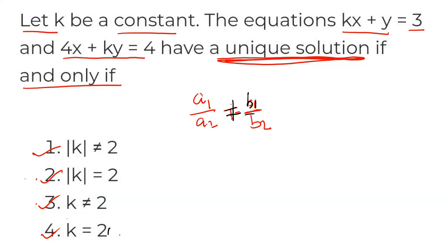So, unique solution means a1 by a2 not equal to b1 by b2. Now, let's see the option. So, this option is eliminated. If it is not equal, that option is eliminated. So, we have two options. So, now, a1 means that equation 1 coefficient of x. So, k, divided by a2, second equation coefficient of x, 4, not equal to b1, y coefficient 1, by b2, second equation y coefficient 1. Cross multiply: k square not equal to 4. K square not equal to 4, which means that k not equal to plus minus 2.